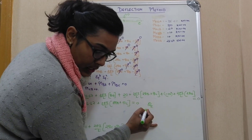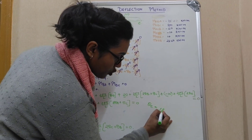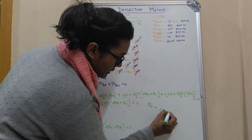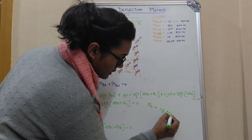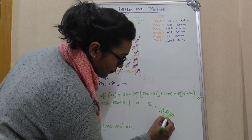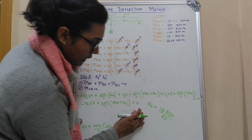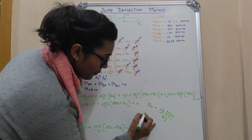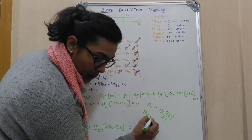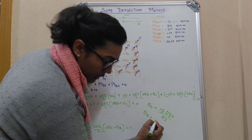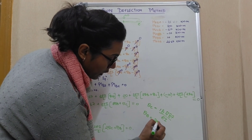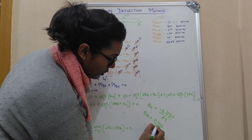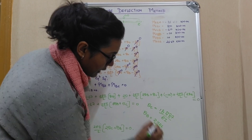Solving the two simultaneous equations, theta_C came out to be 787/EI and theta_B came out to be 2.6/EI after substituting the length values.